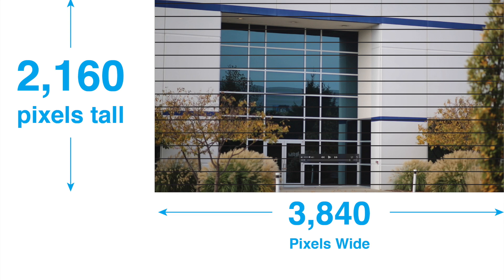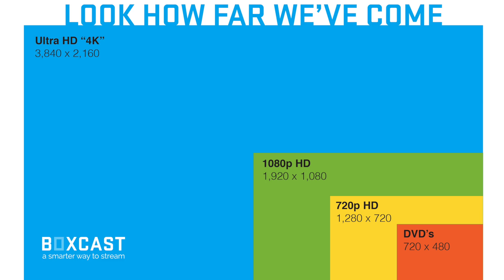So it's four times as much as what we're used to in HD today. It's more pixels, and more pixels means more detail in your image. How many pixels you ask? 8,294,400. I knew that number off the top of my head. Guys, look how far we've come.